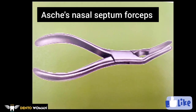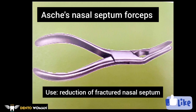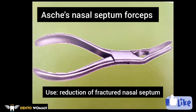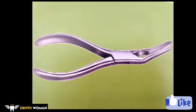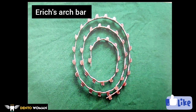Asch's septal forcep — also known as nasal septal forceps, used for the reduction of a fractured nasal septum. It is used along with Walsham's forcep in nasal fractures. This is an unpaired instrument; the blades are narrow and long with minimal curvature.